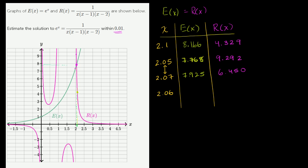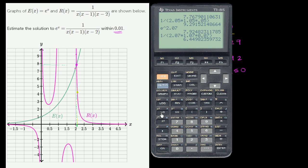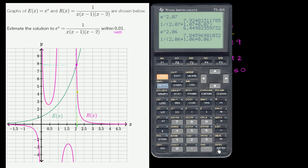And just for fun, let's actually try it out. So e to the 2.06 is 7.846. And if we evaluate R(x), it's 1 divided by 2.06 times that minus 1, which is 1.06, times 0.06, gets us to 7.632. So we're also getting pretty close.